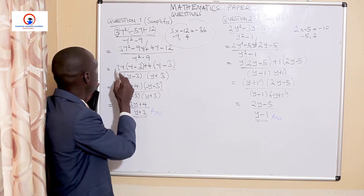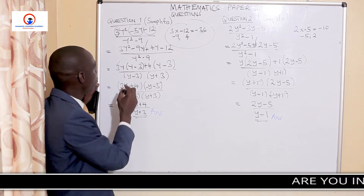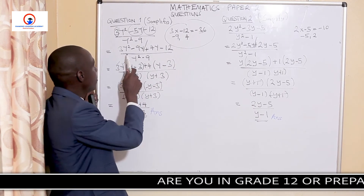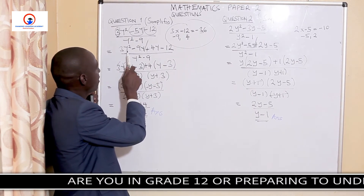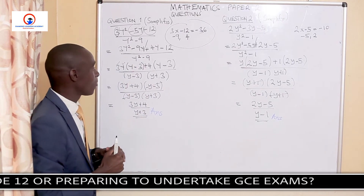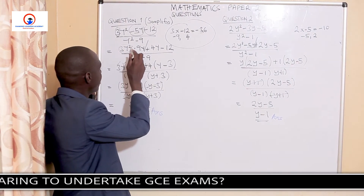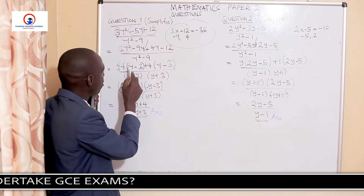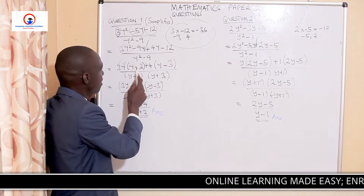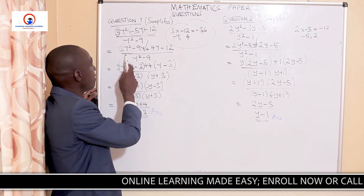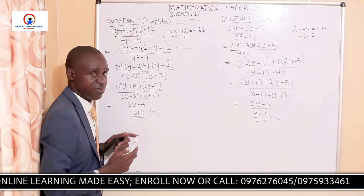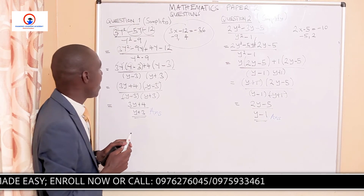I'm going to take out 3 and also take out y because it's common — it's appearing on both sides. What has remained is the y alone. The negative sign drops there, and 3 divided into 9 gives us a negative 3. Then we proceed to the other part of the equation, which is 4y minus 12.